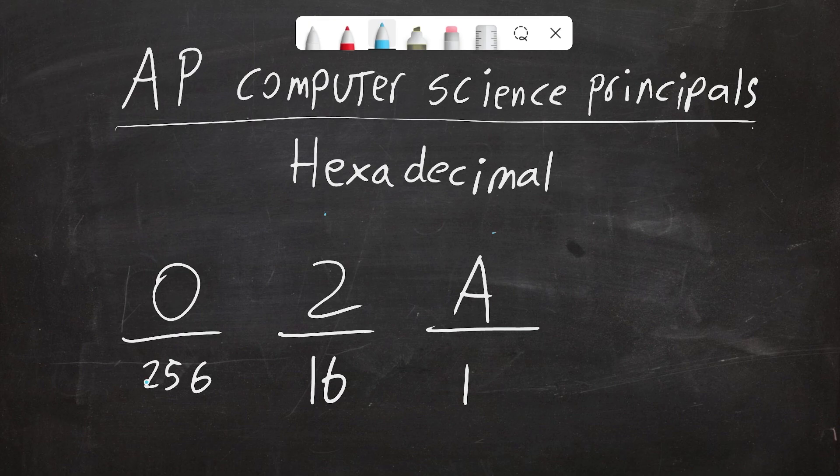Okay, so we have a 0 in the 256 spot, so nothing there. We have a 2 in the 16 spot, so 2 times 16, which is 32. We'll get back to that. And remember, A represents 10, so 10 ones. There's 10 ones, two 16s, and no 256s for a total of 42. Please feel free to check my math on that.